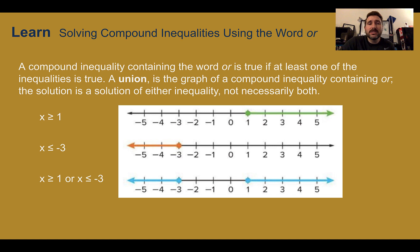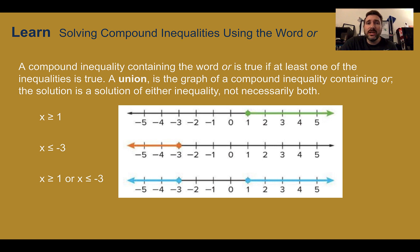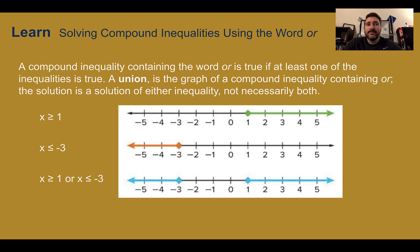Solving compound inequalities using the word OR. A compound inequality containing the word OR is true if one of the inequalities is true — not necessarily both. As long as one is true, it's good. A union is the graph of a compound inequality containing the word OR. So we have an intersection for AND and a union for OR. The solution is a solution of either, not necessarily both.